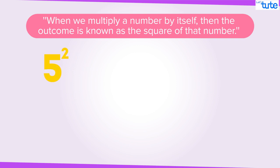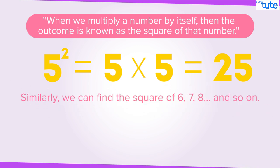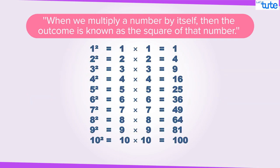For example, square of 5 is 5 into 5 which is equal to 25. Similarly, we can find the square of any number. Most of you must be knowing squares of numbers from 1 to 10. But what about numbers like 56, 78 or 83?